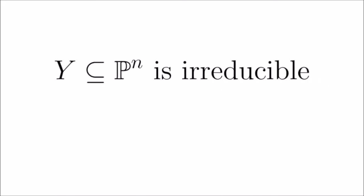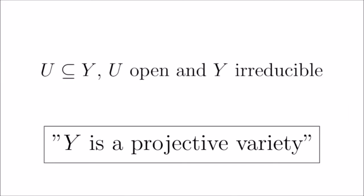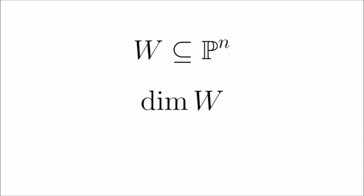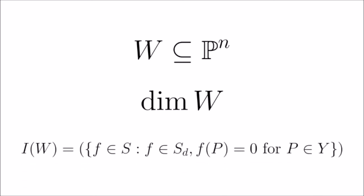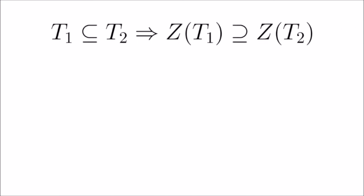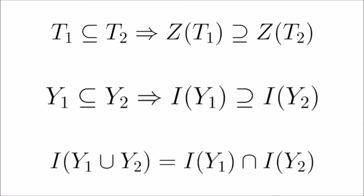We continue by restating a lot of the definitions from the affine case with a new coat of projective paint. First, similar to last time, we'll call an irreducible closed subset of projective n-space a projective variety, and an open subset of a projective variety a quasi-projective variety. For a subset W of projective n-space, we can define the dimension as before, but since we can only define evaluation on points of W by homogeneous polynomials, we define the ideal of W as the ideal generated by the homogeneous polynomials that all points of W evaluate to zero under. We then define the homogeneous coordinate ring of W in the expected way. When working with projective space, things are usually similar but end up being off, and it has a lot to do with the following: our normal results of order-reversing zero sets, order-reversing ideals, and union swapping with intersections of ideals stay the same in the projective case.